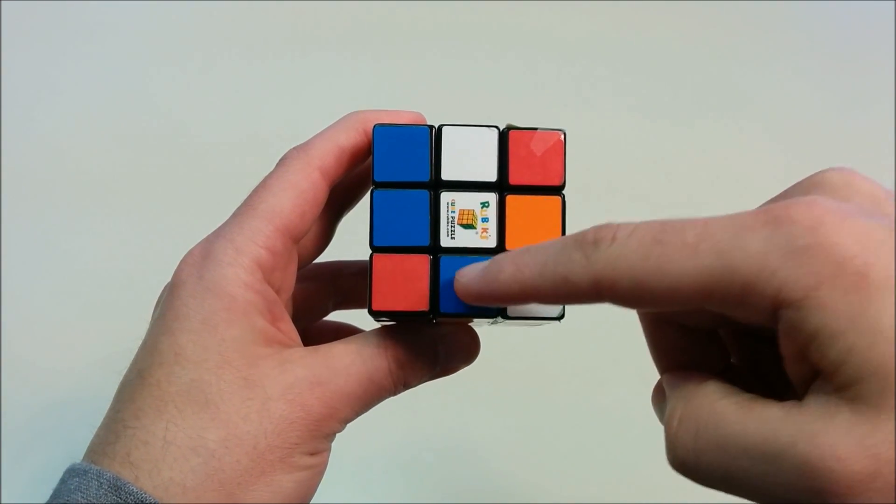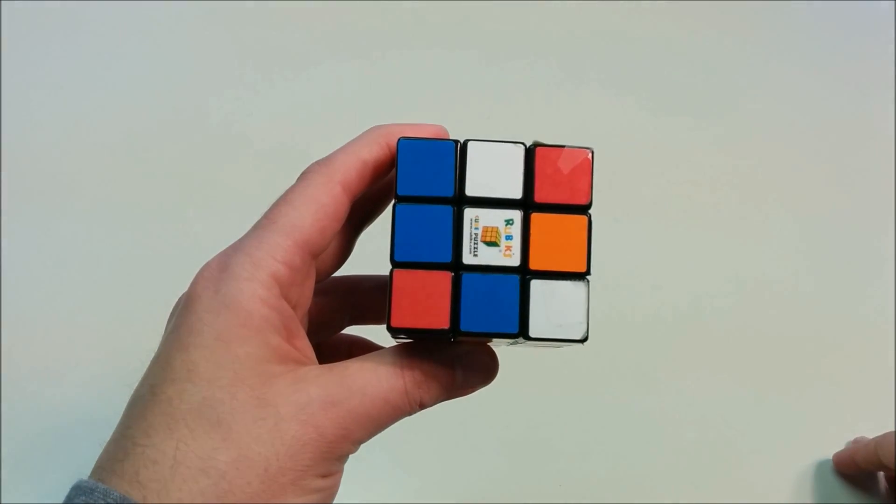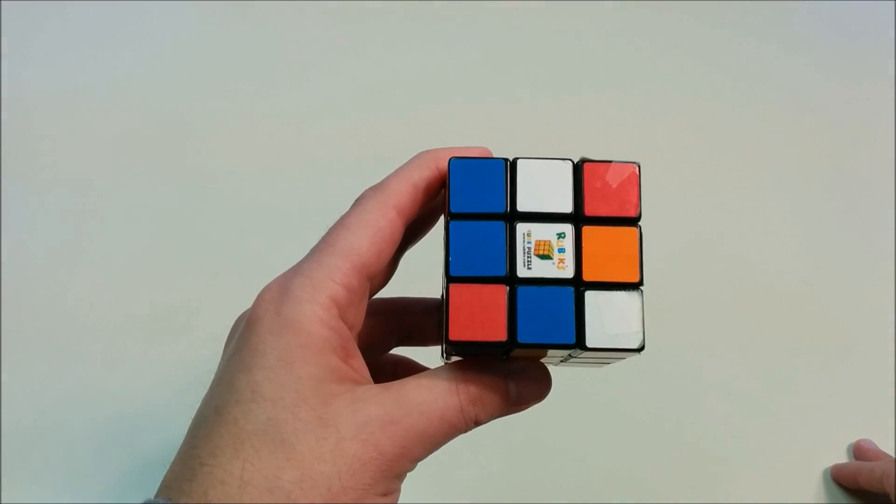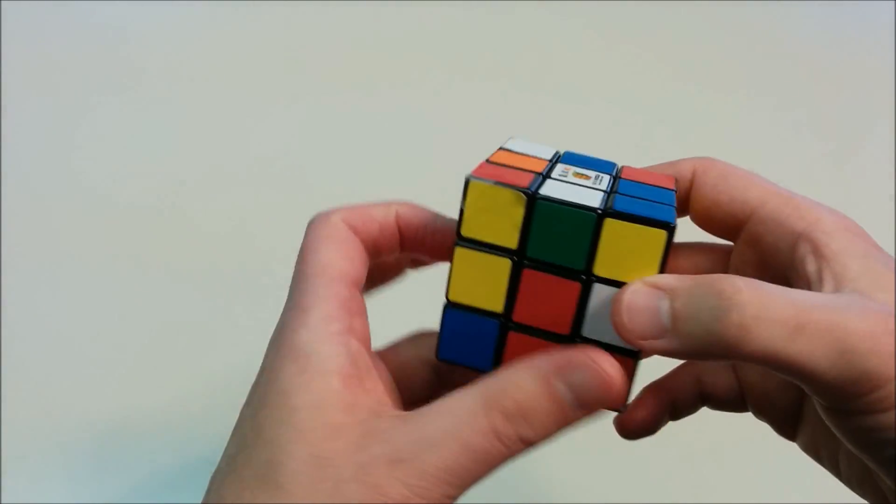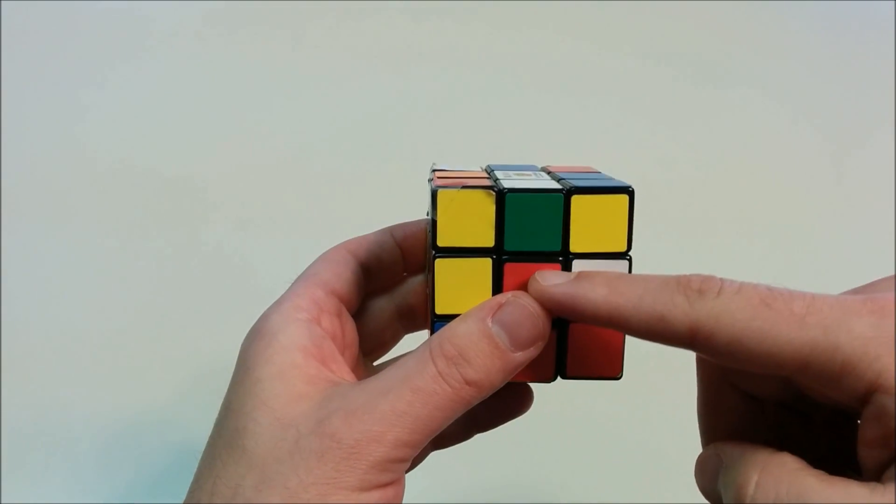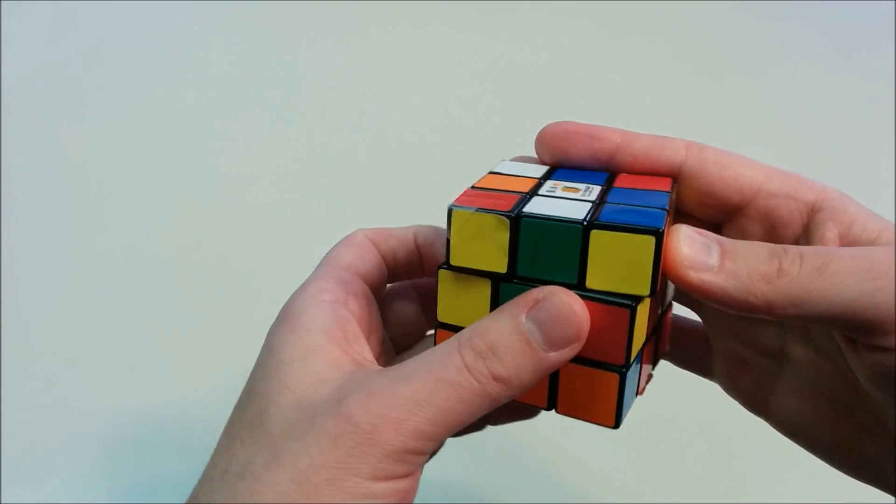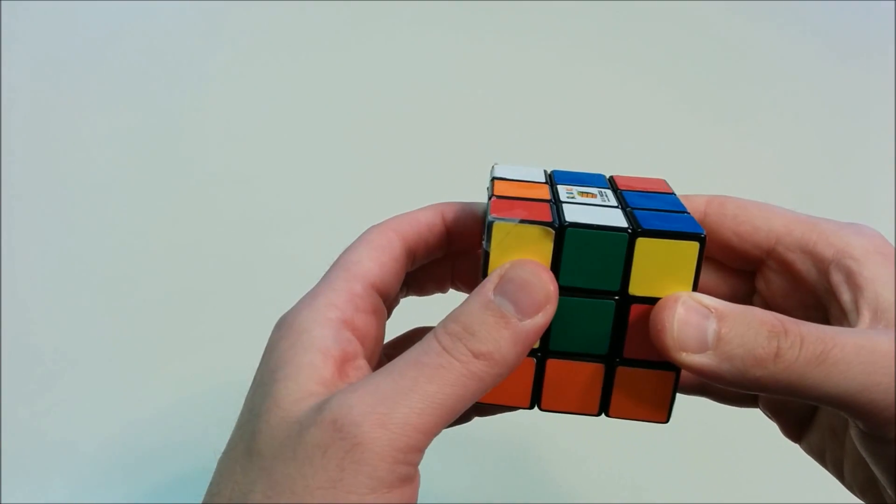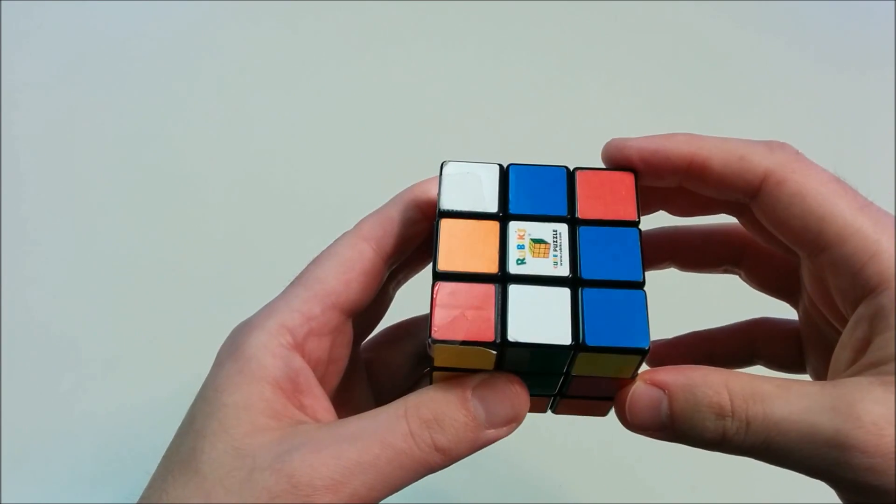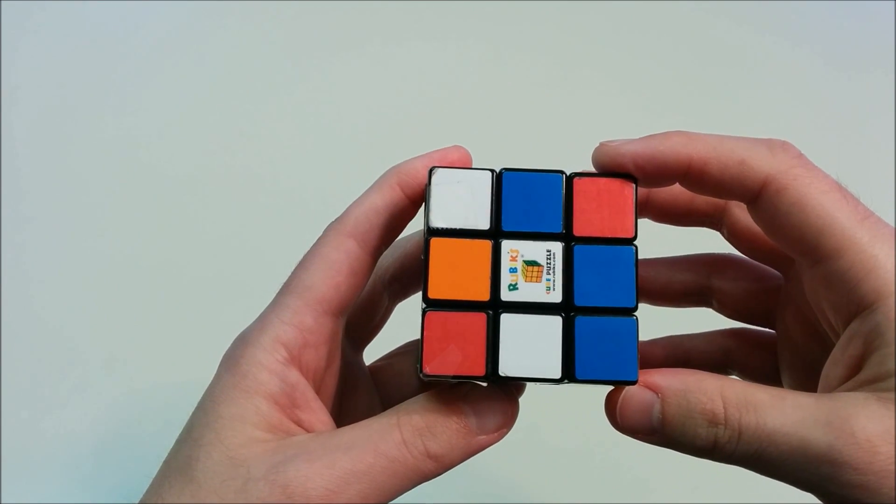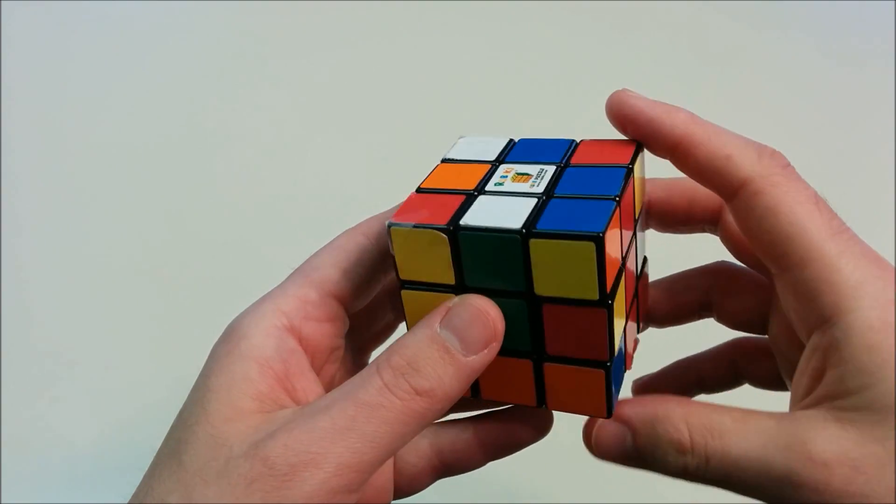So we're going to look for the four edge pieces which have white on one side and another color on another. It happens that one of those edge pieces is already next to the white center. So here we have a green and white edge piece, and to put that in position we simply rotate the top face until we get the green to match the green center. So we've completed one of the four that are necessary for the white cross.